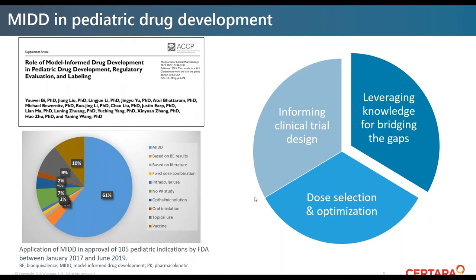There have been quite a number of publications on model-informed drug development, especially over the past few years. In the approval of 105 pediatric indications by the FDA between January 2017 and June 2019, model-informed drug development was used in 61% of cases—specifically for informing clinical trial design, dose selection, and leveraging knowledge to bridge gaps. POPPK modeling was used in all MIDD cases, and exposure-response modeling in about 30%. PBPK is increasingly advocated for incorporating ontogenies, DDI assessment in children, and studying complex absorption.